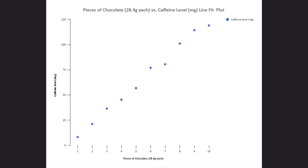You can see that the independent variable, pieces of chocolate, is placed on the x-axis, and the dependent variable, caffeine content, is placed on the y-axis.